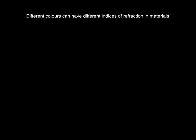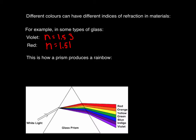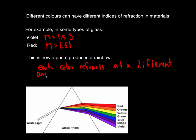Different colors can have different indices of refraction in some materials. For example, in some types of glass, violet has an index of refraction equal to 1.53, whereas red has an index of refraction equal to 1.51. This is how a prism produces a rainbow: as white light hits the prism, each color refracts at a different angle. Because each color has a different index of refraction, the wavelengths are separated.